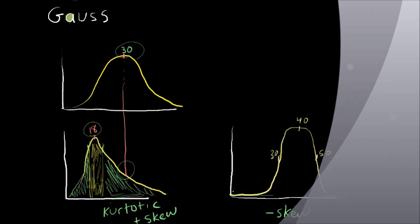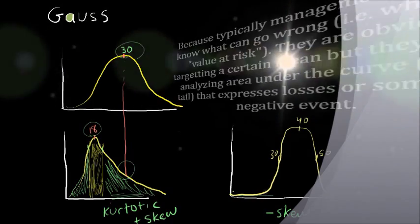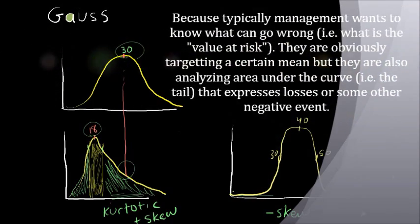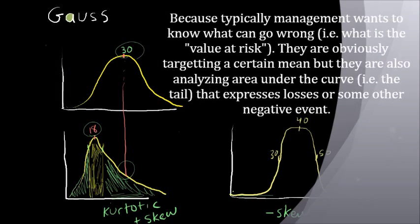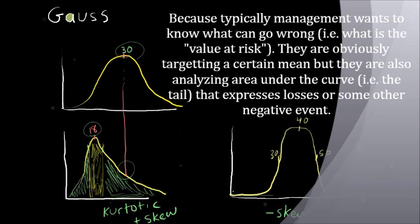And those are very important to explain to management. You can't just tell them, well, the mean is this, and therefore that's what we're targeting, and that's all you need to know. Go off and make your decision. It's important to inform senior management at a company or a hospital, whoever it is you're trying to inform, of the attributes of this distribution.